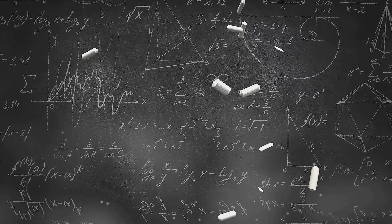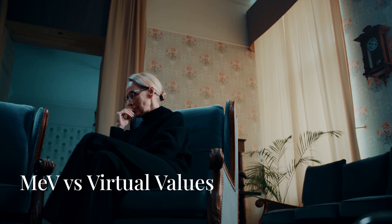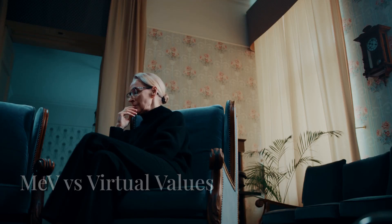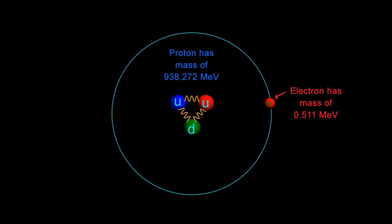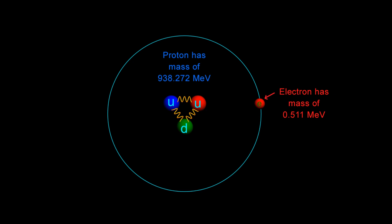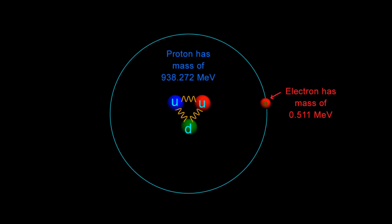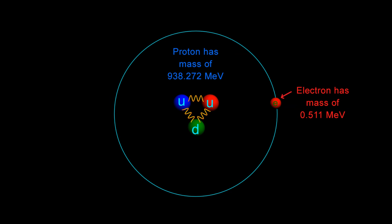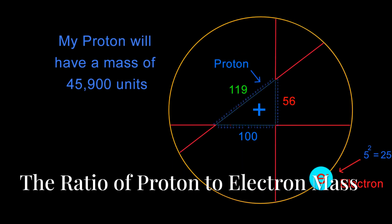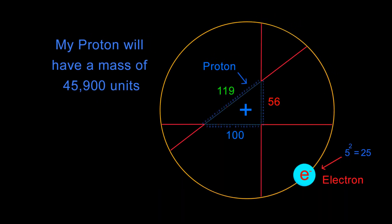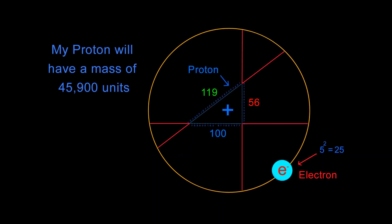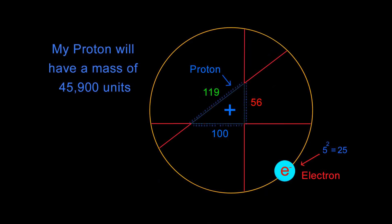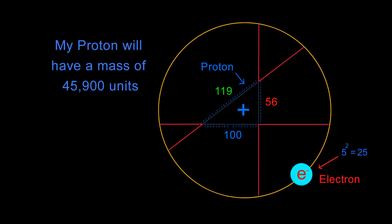But this was still not the big revelation. Now, you might be sitting there thinking to yourself, wait a minute. Physicists measure an electron to be 0.511 MeV and a proton to be 938.272 MeV. My electron and proton have virtual values of 25 and 45,900 respectively. So why am I getting so excited by this AI's calculations and praise for my work?